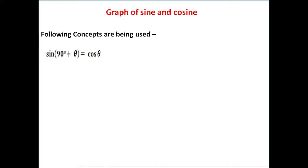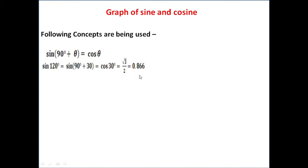Concept number one: sine(90 + θ) equals cos θ. For example, if you consider sine 120 degrees, that can be written as sine(90 + 30), and finally it becomes cos 30, whose value is root 3 by 2, that is 0.866.